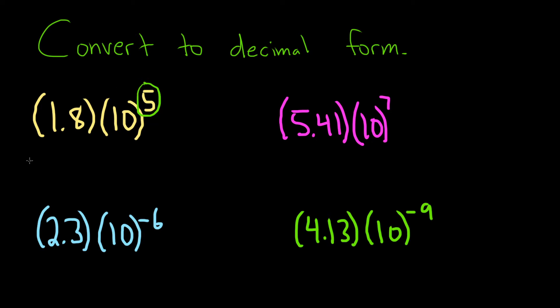So in this case here, it's positive, so what we do is we take 1.8, and then we move it to the right five times. So 1, 2, 3, 4, 5. Boom, there it is.